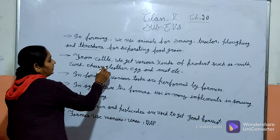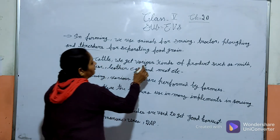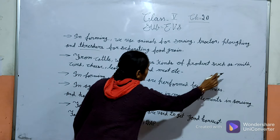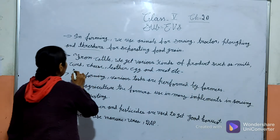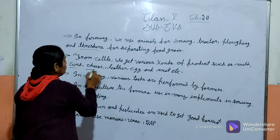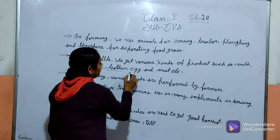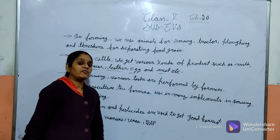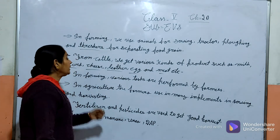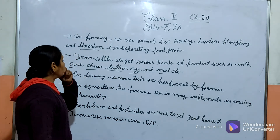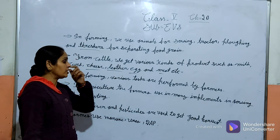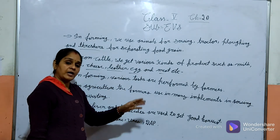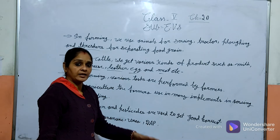From cattle we get various kinds of products such as milk, curd, cheese, leather, eggs, and meat. In farming, we learn from cattle and animals about farming and agriculture.